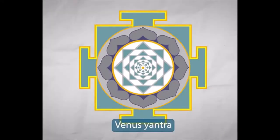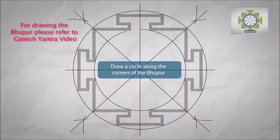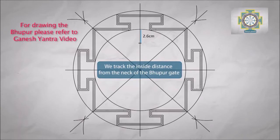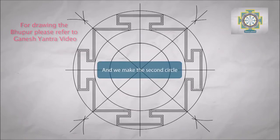Venus Yantra. Draw a circle along the corners of the Bhupur. We track the inside distance from the neck of the Bhupur gate and we make the second circle.